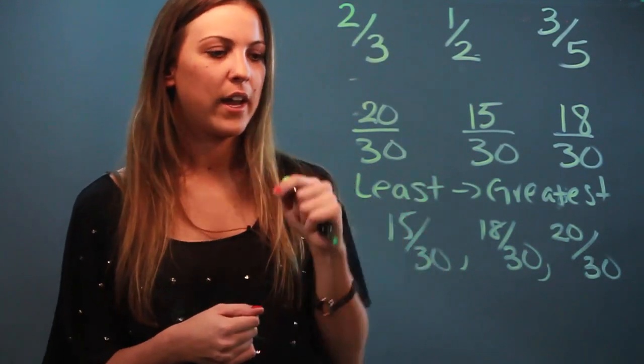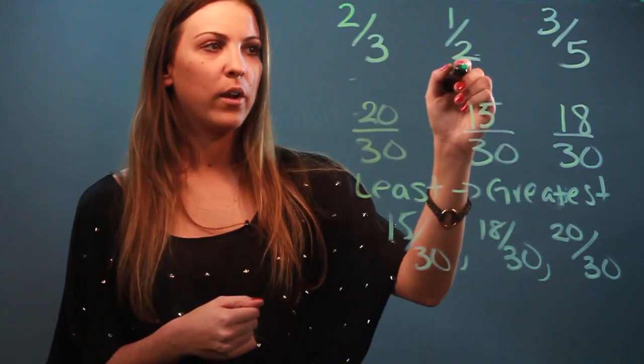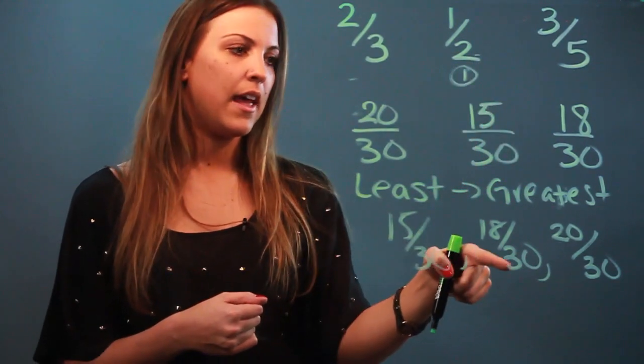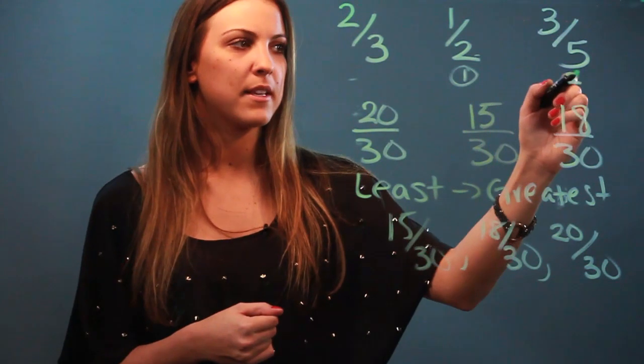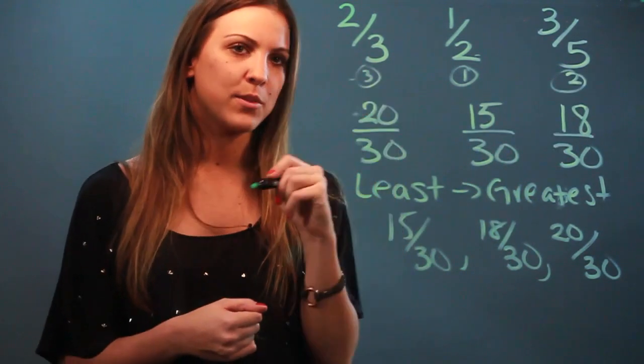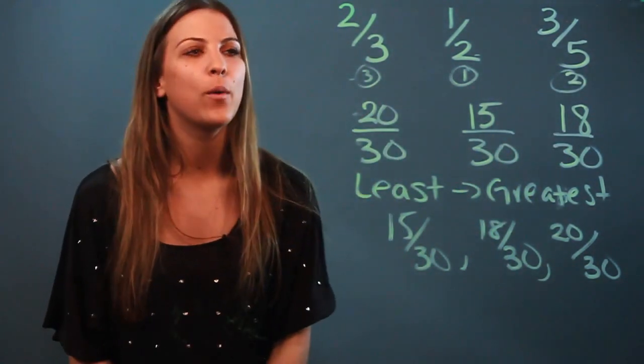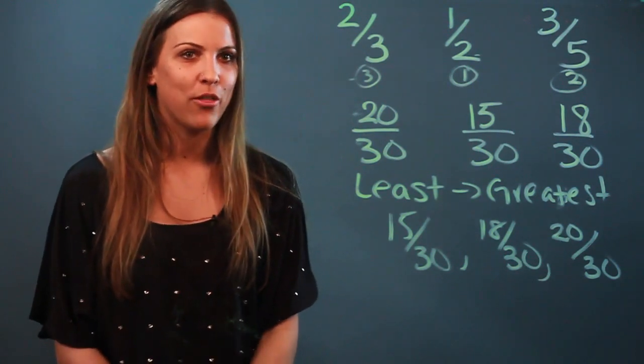And then I can just go ahead and see which ones they correspond to. So one half is my smallest one, and then 18 over 30 was three fifths. That's my second one, and two thirds is my largest one. And I just showed you how to tell whether or not a fraction lies between two other fractions.